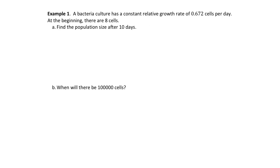Here's an example. A bacteria culture has a constant relative growth rate of 0.672 cells per day. At the beginning, there are 8 cells. We want to find the population after 10 days. We're told it has a constant relative growth rate, so we're dealing with an exponential growth function, and k equals 0.672 — roughly 67% growth per day, which is very fast.